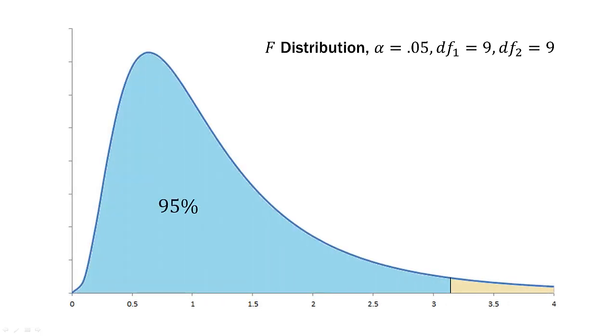So we need an F distribution with an alpha of 0.05, degrees of freedom one of nine, and degrees of freedom two of nine. And here is that distribution. So 95%, that's our non-rejection region, and the 5% is our rejection region.